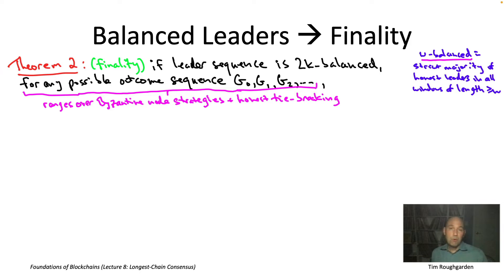That's what we're quantifying over when we say for any possible outcome sequence. And the conclusion is going to promise us finality. So specifically, once a block is not only on the longest chain, but has also been extended at least k times on the longest chain, at that point, we can safely regard that block as finalized, with no possibility of ever being rolled back in the future.